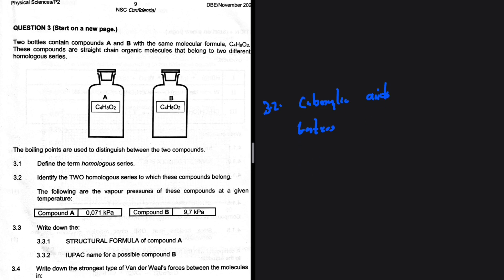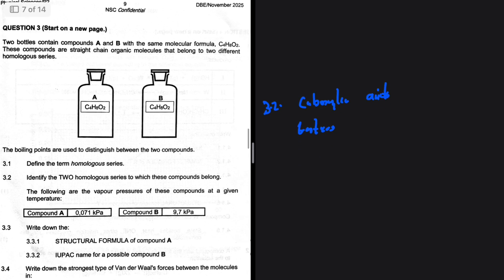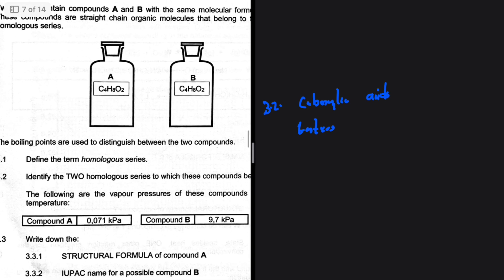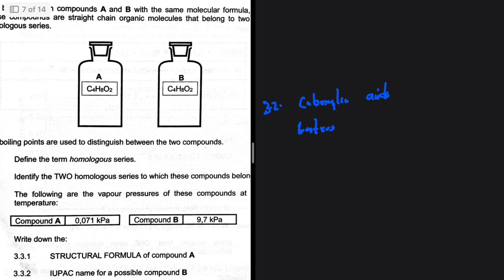The following are vapor pressures of these compounds at a given temperature. Compound A has a vapor pressure of 0.071 kilopascals and compound B has a vapor pressure of 9.7 kilopascals.